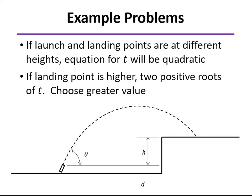But of course, in this case, you want to choose the greater value because what you're saying is that y is equal to that final height at two points. Well, one of those points is going to be on the way up. The second point will be on the way down when it lands.